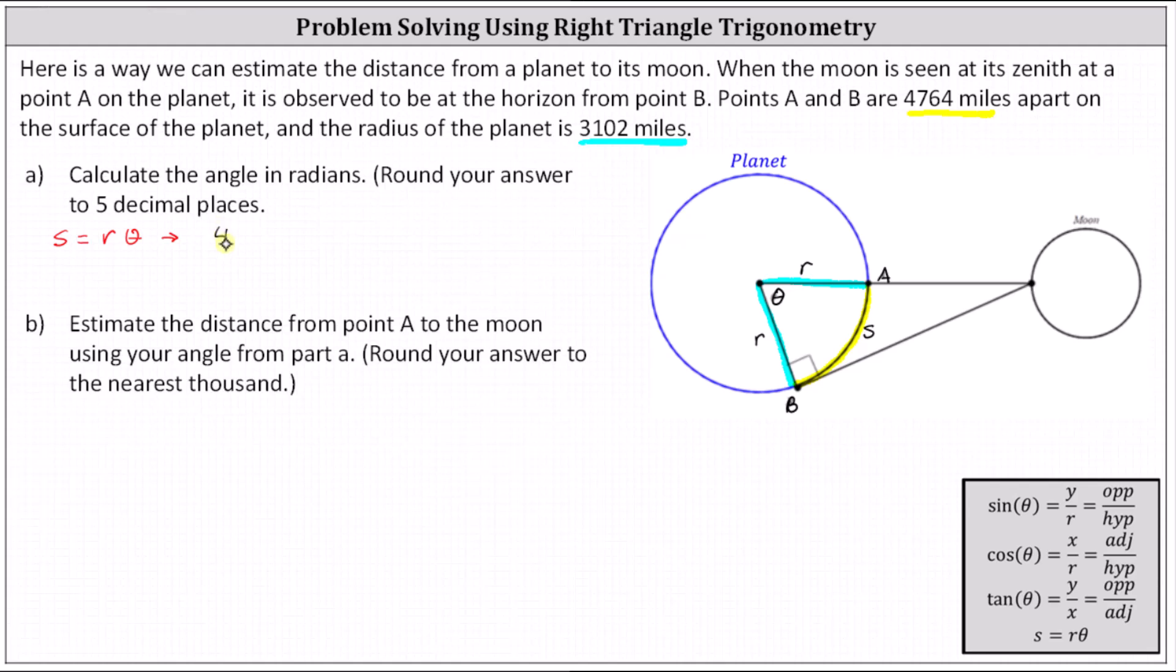which gives us the equation 4,764 equals 3,102 times theta. And now we divide both sides by 3,102 to determine theta. Remember in the arc length formula, theta is in radians.